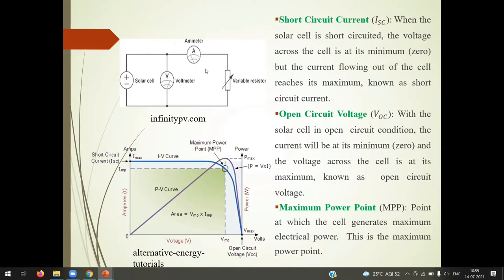So, we will see one by one parameters for short circuit current. Now, when solar cell is short circuited, the voltage across cell is at its minimum. But current flowing through the cell, which is its maximum, it is known as short circuit current.